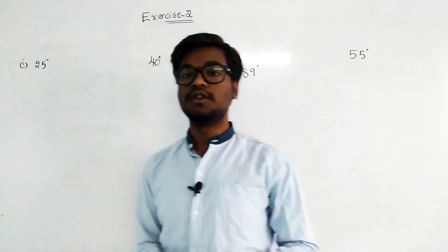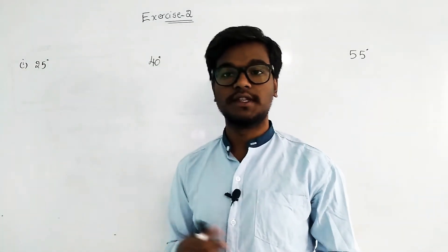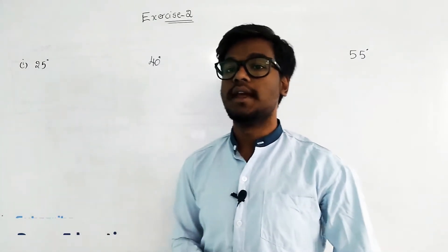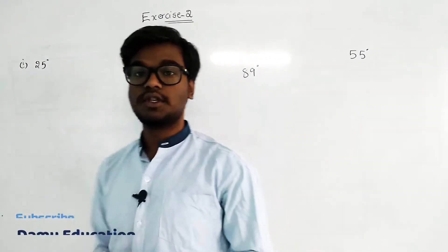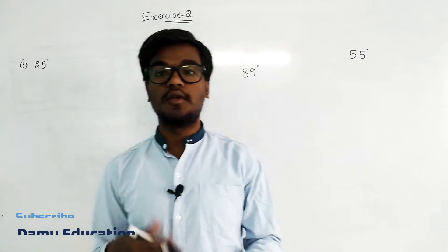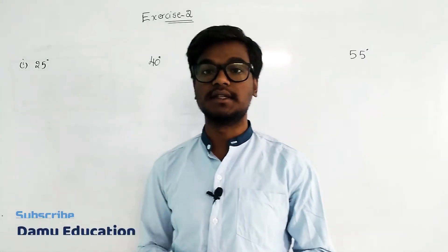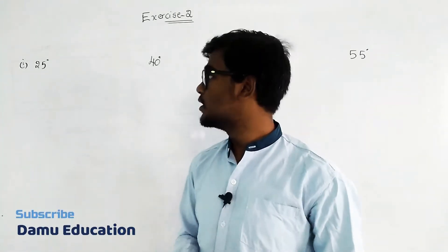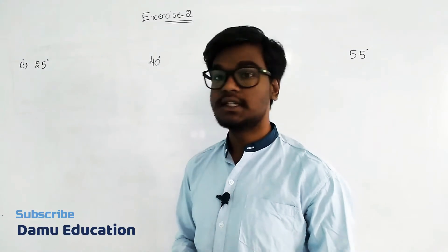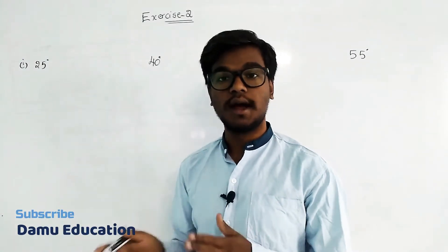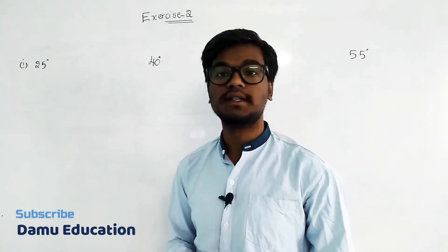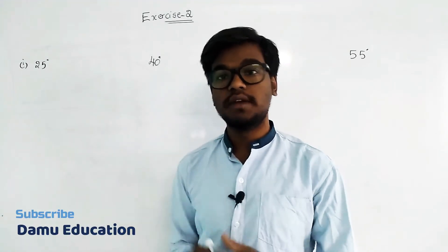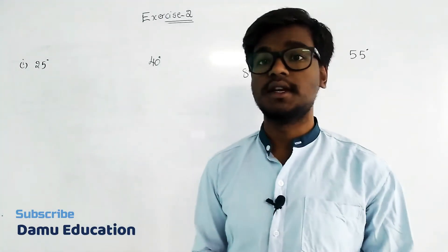In this module we are going to discuss the solution for the second question in Exercise 2 on Lines and Angles. The question is: what is the complementary angle for 25 degrees? As we discussed, the sum of two complementary angles will be 90 degrees.